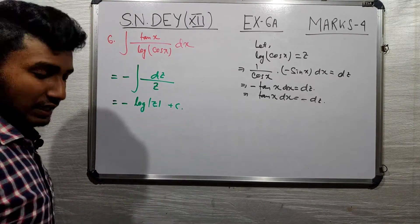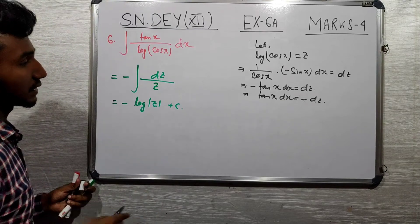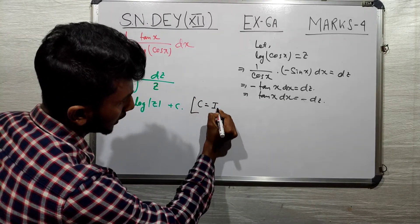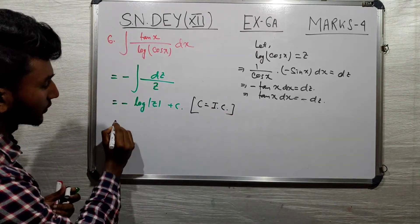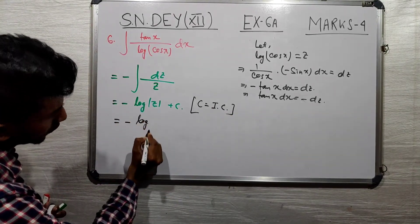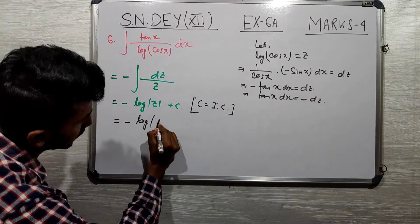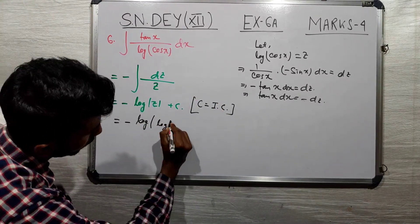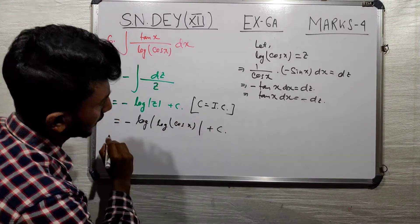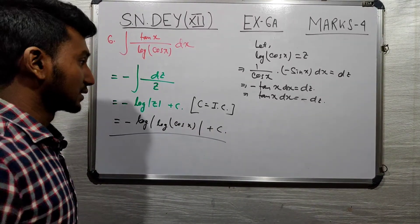Now we substitute back the z value. C is the integration constant. So the result equals minus log mod z, and since z equals log(cos x), the final answer is minus log mod log(cos x) plus c. This completes Question Number 6.